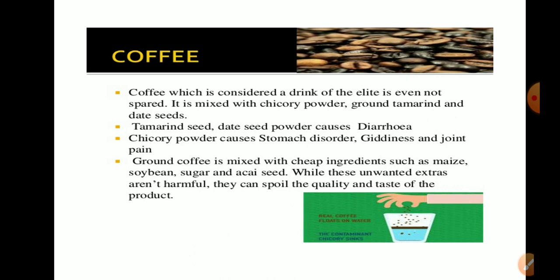Coffee is commonly adulterated with chicory powder, ground tamarind, and date seed powder. Tamarind seed and date seed powder can cause diarrhea. Chicory powder causes stomach disorders and joint pain.